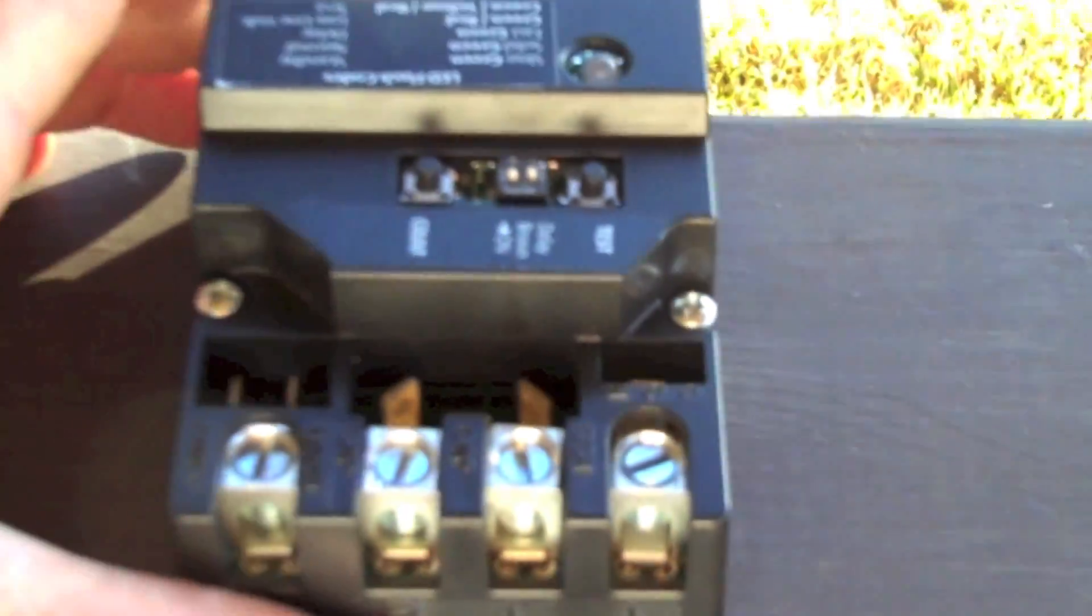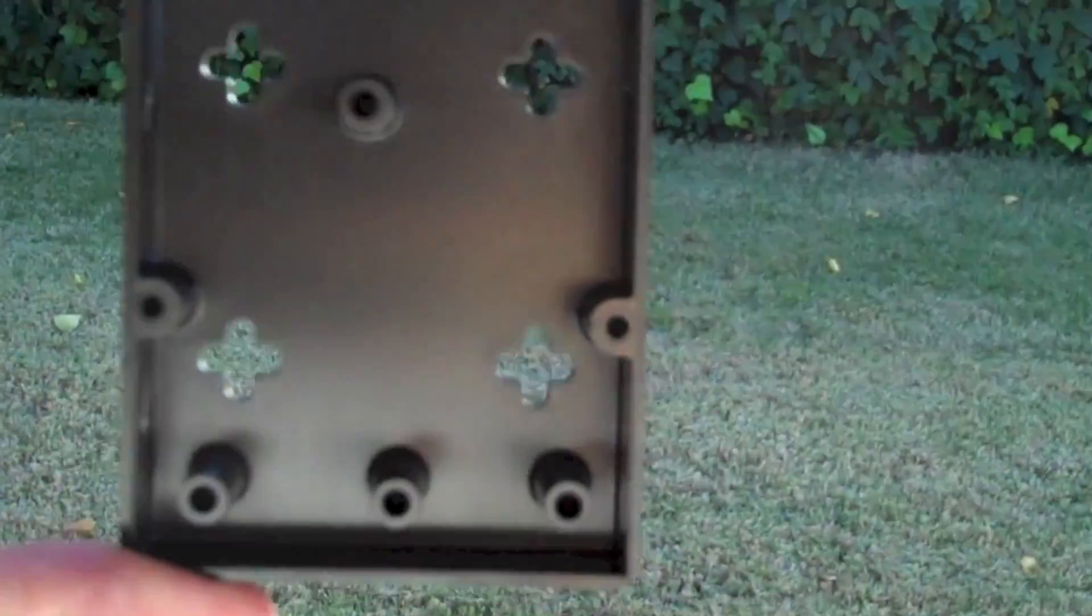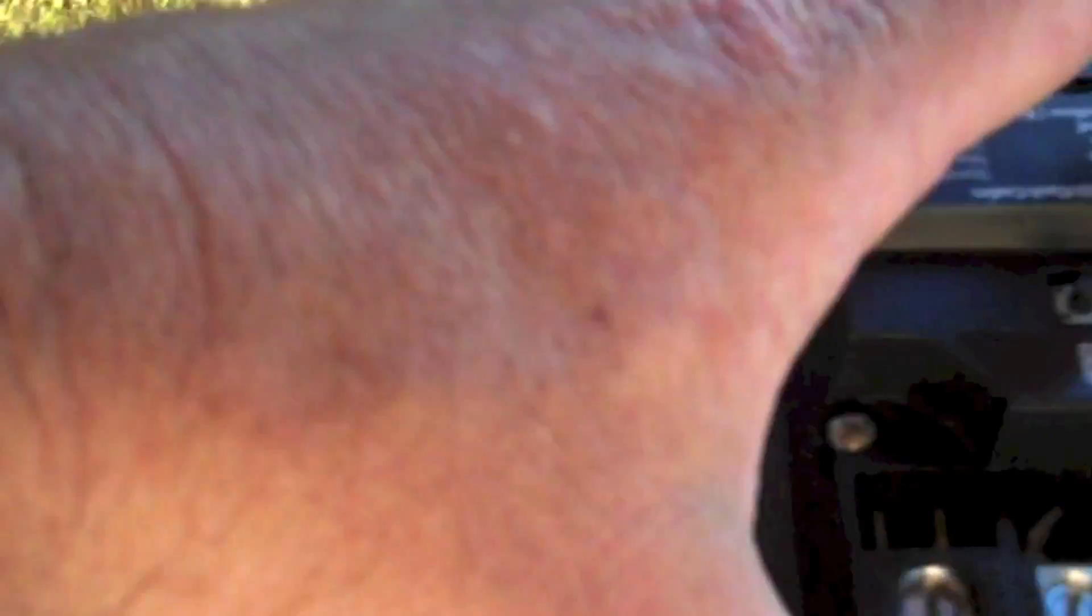And then you got your L1, L2, common, run, all your line terminals right here. Crankcase heater, cap, hard start kit, and fan common. When you install it, you actually take it out like this, and there's your base, your mounting base. The mounting base is about the size of a three-pole contactor.